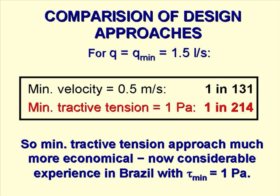For a minimum velocity of 0.5 metres per second, the minimum gradient is 1 in 131, but for the minimum tractive tension of 1 pascal, the minimum gradient is 1 in 214, which is flatter and therefore much more economical. And there's now considerable experience in Brazil using this value of τ_min equals 1 pascal.